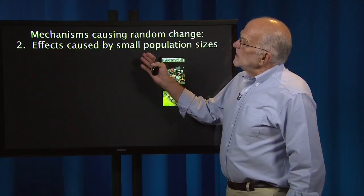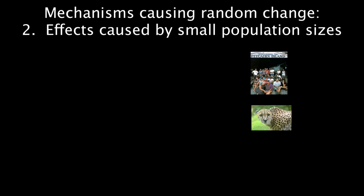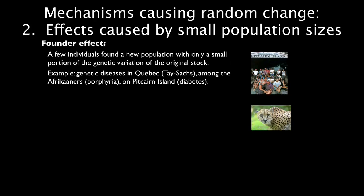The second mechanism causing random change involves small population sizes. Examples include the Pitcairn Islanders and other human founder populations, and cheetahs. The founder effect occurs when just a few individuals found a new population with only a small portion of the genetic variation of the original stock. A mutation for a genetic disease can suddenly appear at high frequency in such a small founding group. Examples include genetic diseases in Quebec, Tay-Sachs disease among the Afrikaners — that's porphyria — and on Pitcairn Island, where the disease is type 1 diabetes.